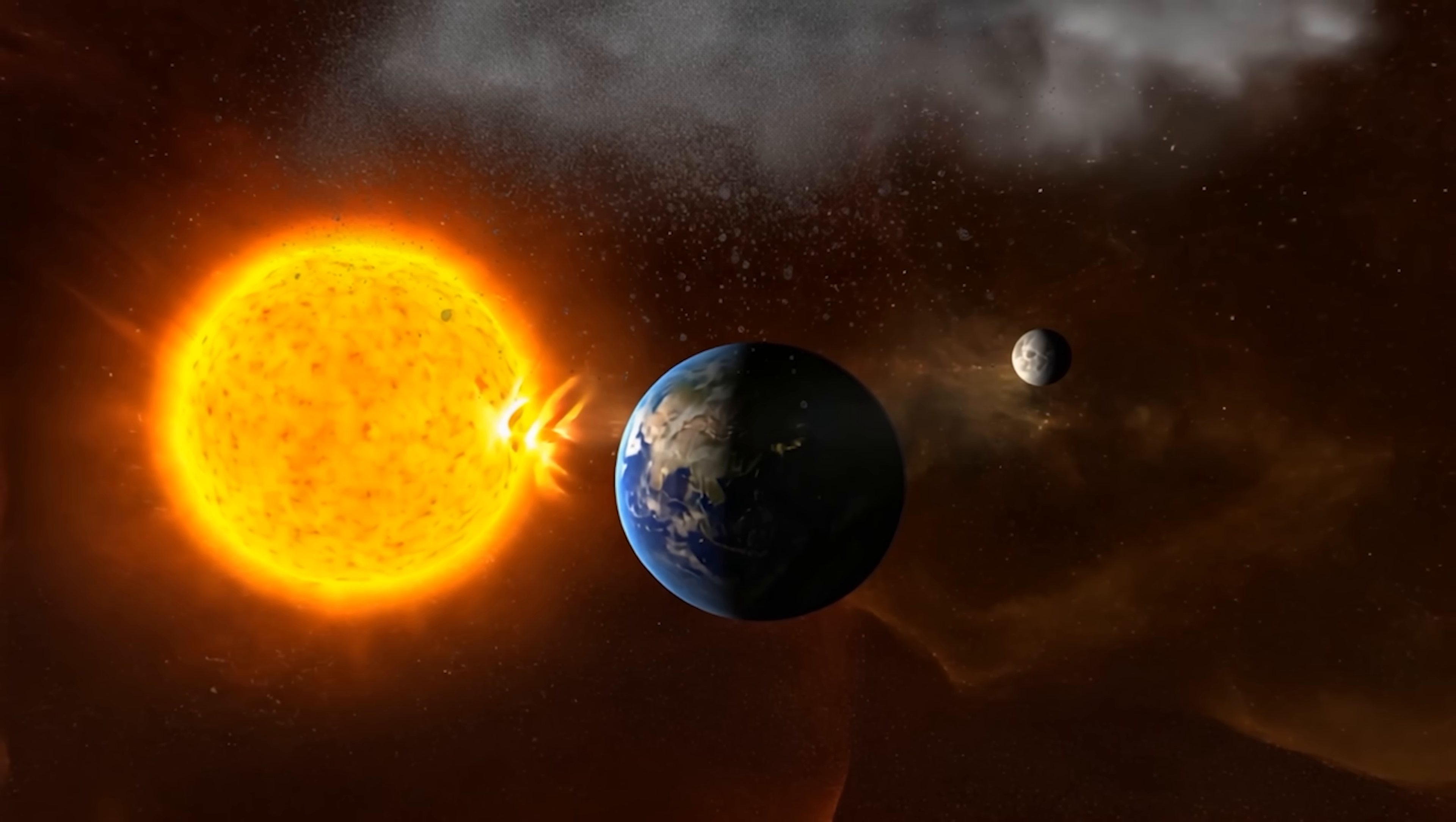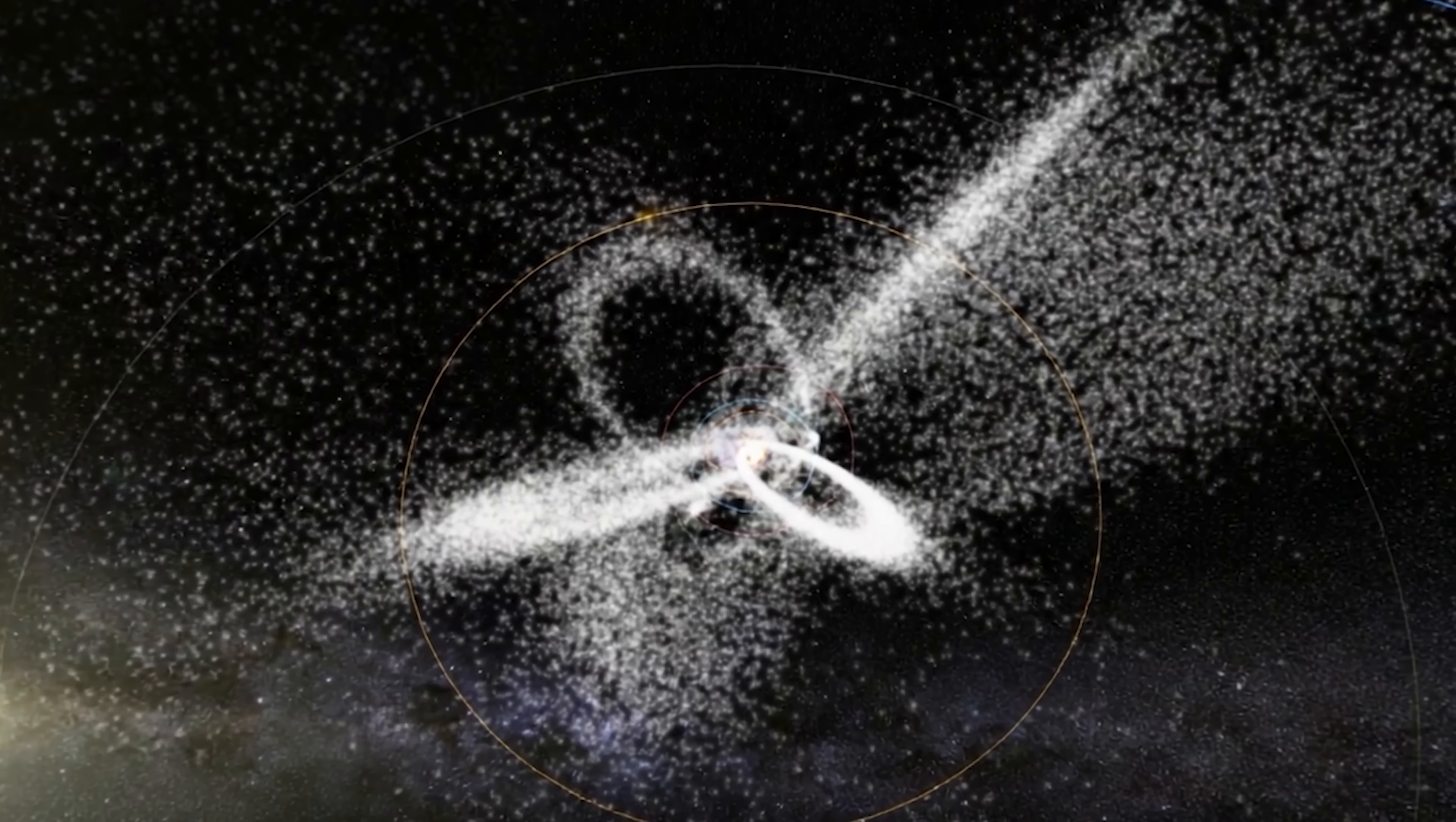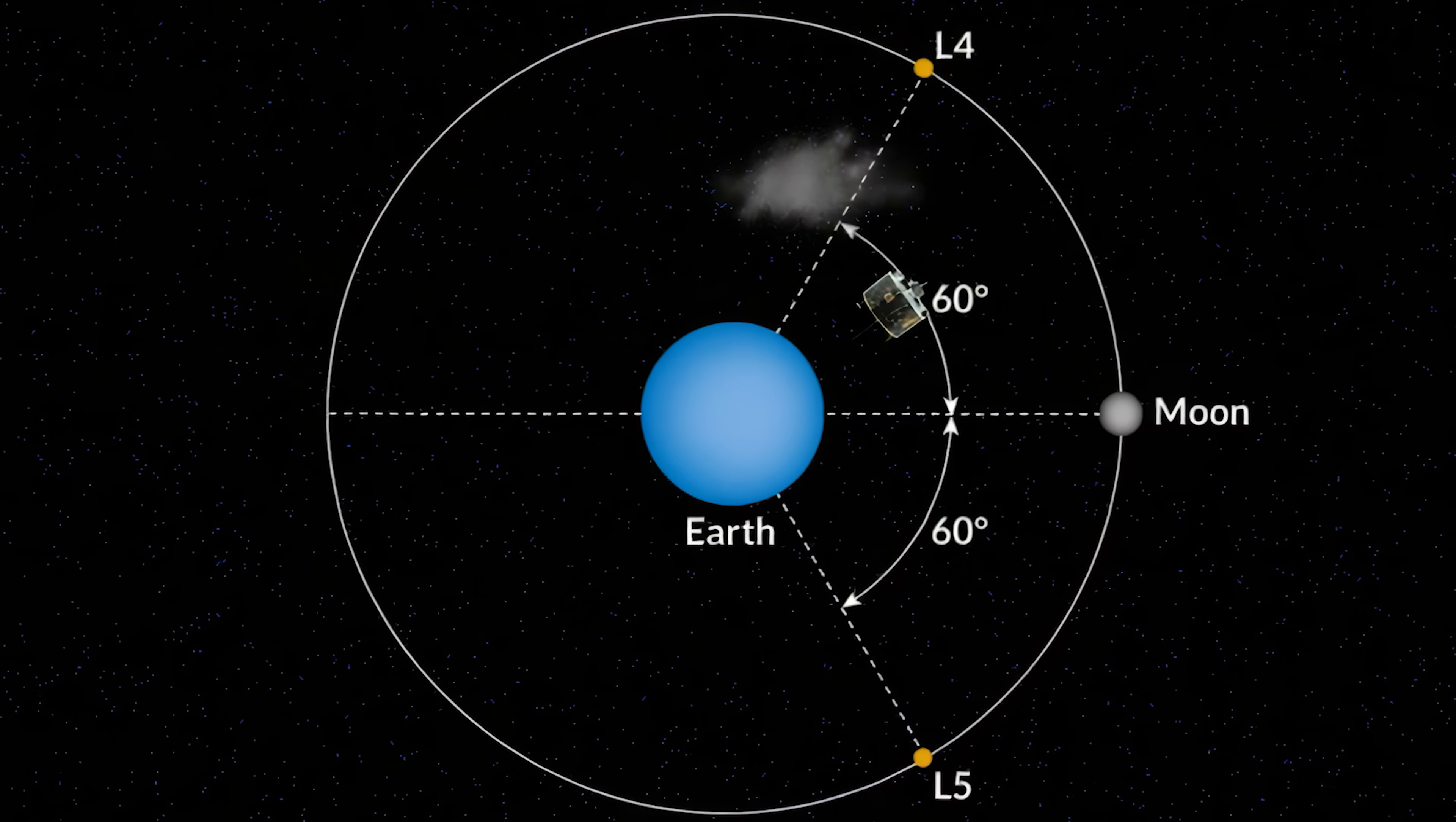Picture this. While you're going about your daily life, massive ghostly structures larger than anything you can imagine are drifting through the cosmos alongside our planet. We're talking about objects that span tens of thousands of miles, so enormous that Earth could fit inside them nine times over. Yet somehow, these colossal entities manage to remain completely invisible to human eyes for the entire history of our civilization.